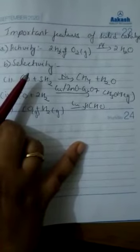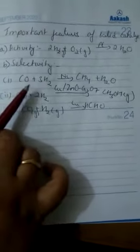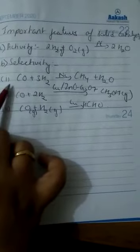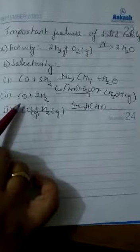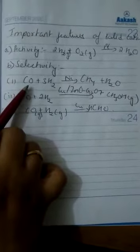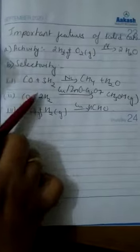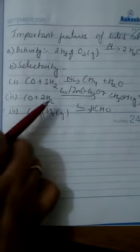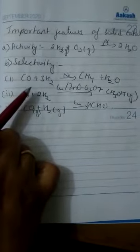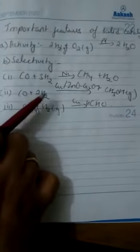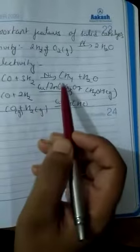For example, in all these three reactions we have the same reactants. Carbon monoxide is being reacted with hydrogen in each case. On the left-hand side all the reactants are same, but on the right-hand side there are different products.